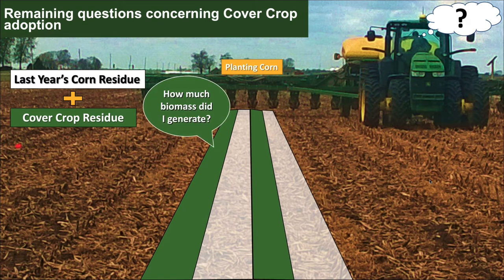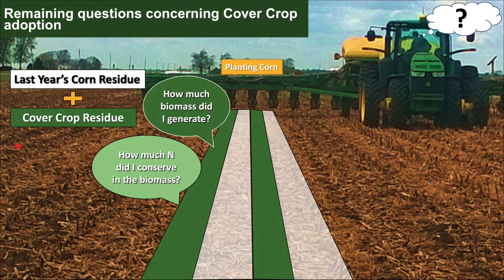One question is how much biomass did I generate? Farmers, when they cover crop, don't always know they're generating, say, a thousand pounds per acre of biomass, which is significant. The next question is the biomass constituents — how much nitrogen did I conserve in that biomass? Because if the nitrogen is in the above-ground or below-ground biomass, it can't be in the atmosphere or in the tile drain water. So if it's in the biomass in the field, you're keeping it in the field.